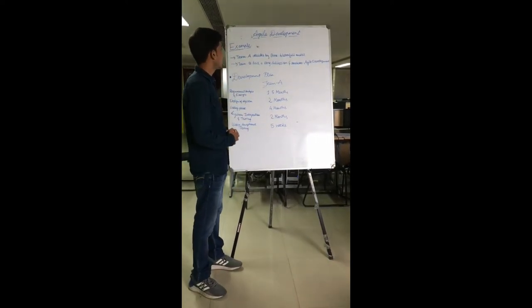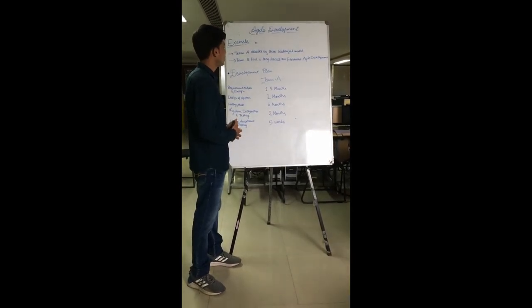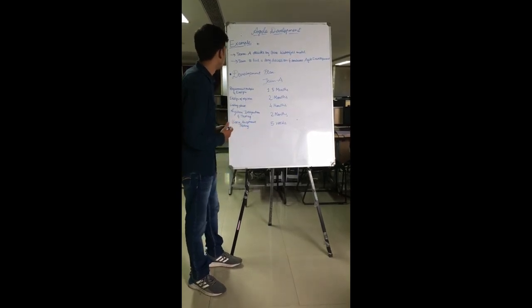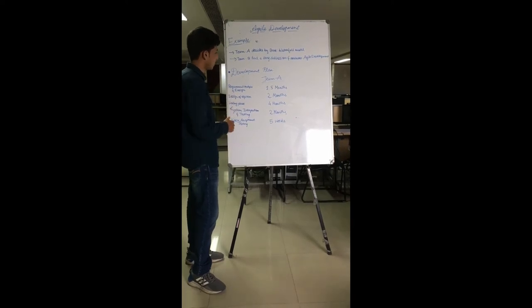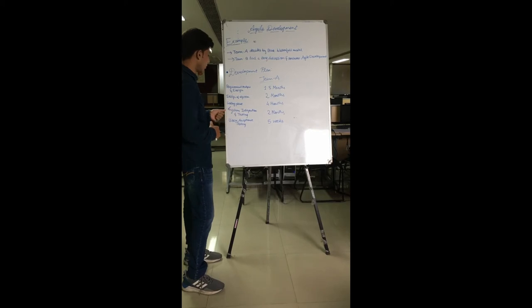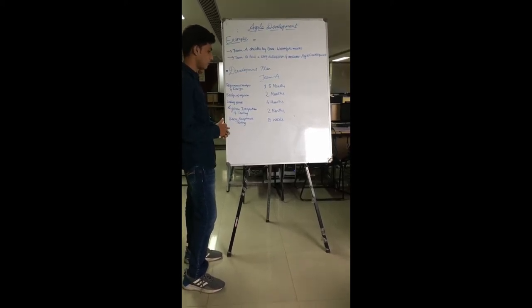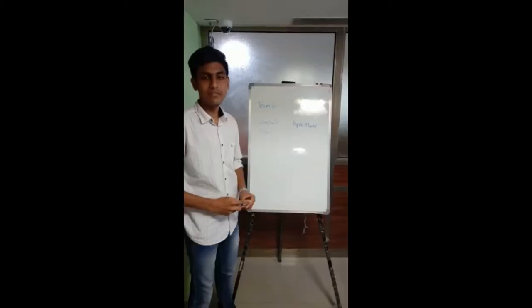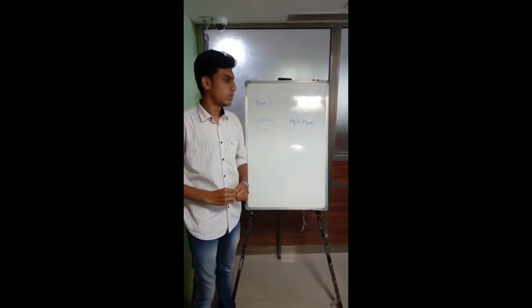Team A decides to go by the book and go with the waterfall model. Team B decides to go with Agile development. The development plan of team A is: requirement analysis and design 1.5 months, system design 2 months, coding phase 4 months, system integration and testing 2 months, and user acceptance testing 5 weeks. During this, the head of the company comes up with an entire new set of requirements.